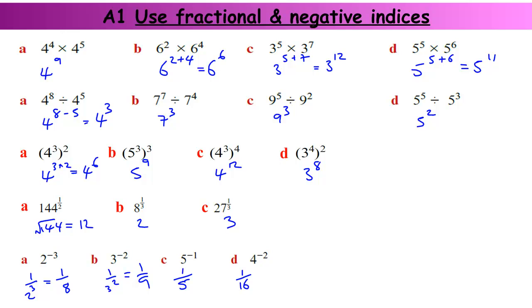So there are all the individual rules. Let's do a couple of examples of some slightly trickier versions when we're mixing them together. Let's try 16 to the power of minus 1 half. That's mixing the fractional powers rule and the negative powers rule. We tend to deal with the negative first — it's just 1 over 16 to the power of 1 half, and 16 to the power of 1 half is the square root of 16. The square root of 16 is 4 — technically plus or minus 4, but we'll just go with 4.